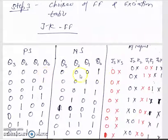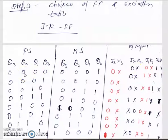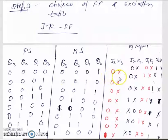For the transition 0 to 1: looking at the JK excitation table, 0→1 requires J=1 and K=don't care, so we write 1 and X. Similarly, Q1 transitioning 0→0 gives J=0 and K=X. For Q2, it is also 0→0, so 0 and X. For Q3, present state 0 to next state 0 gives 0 and X as well.